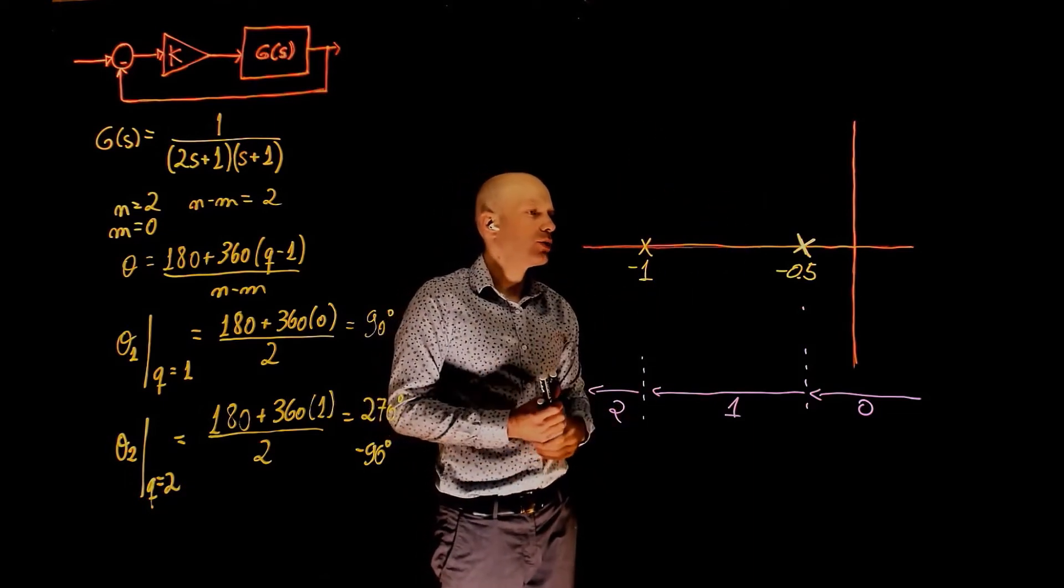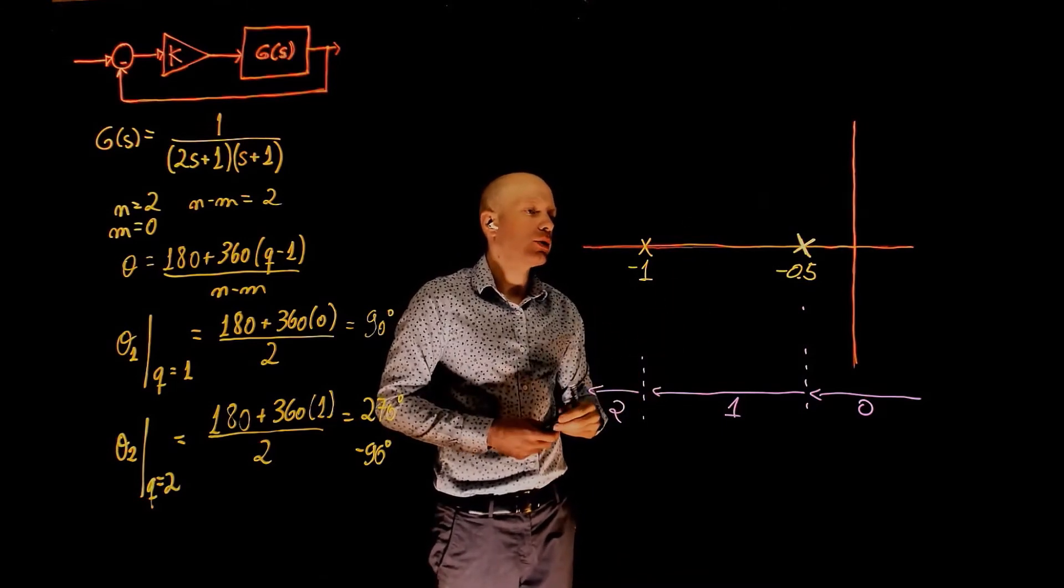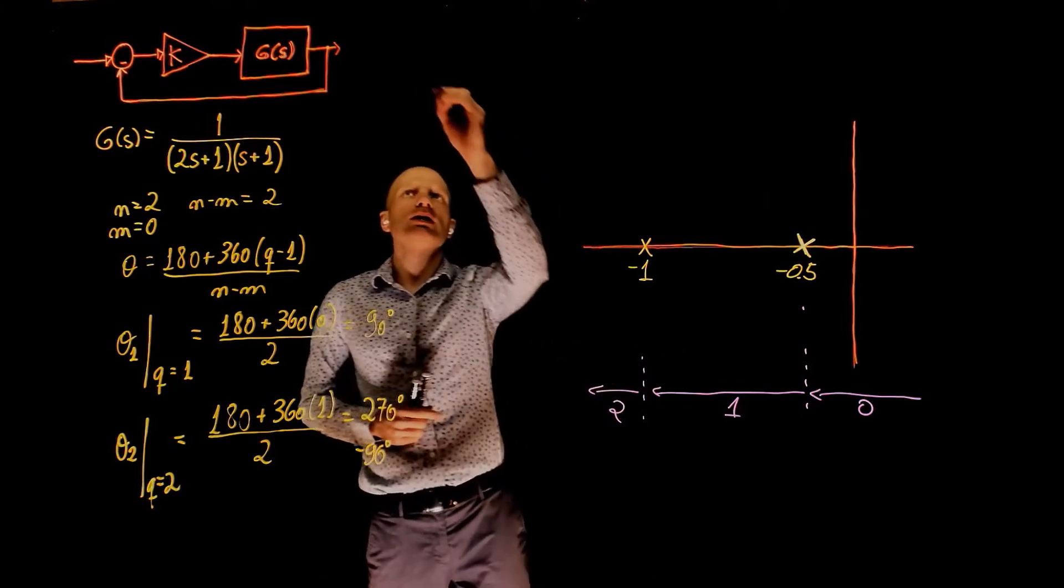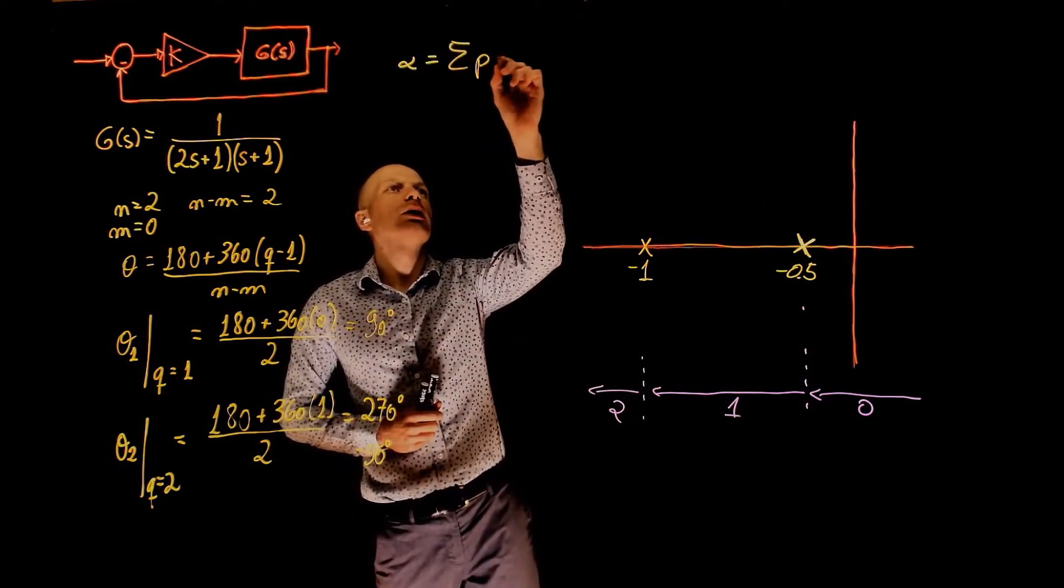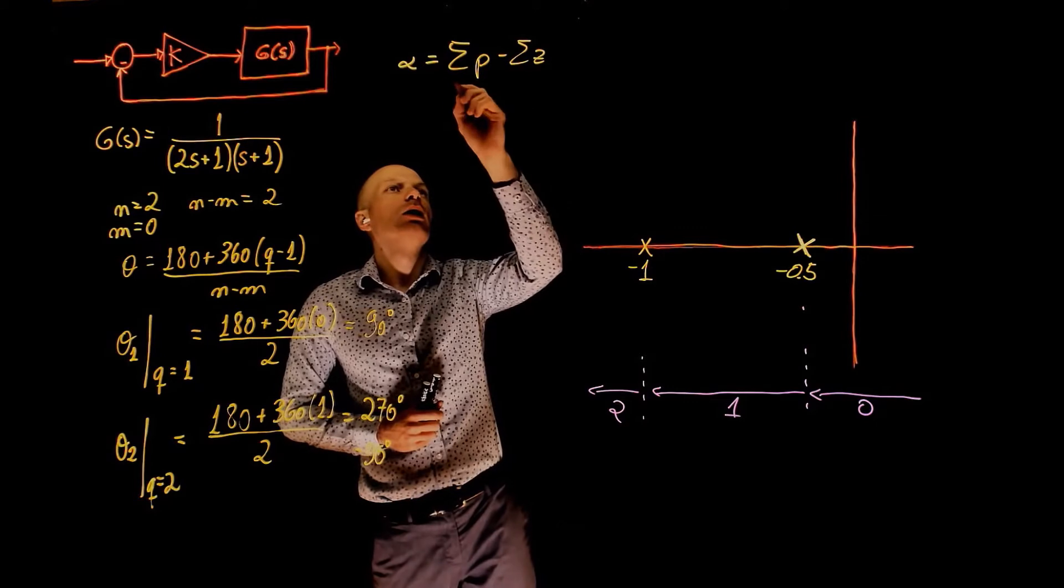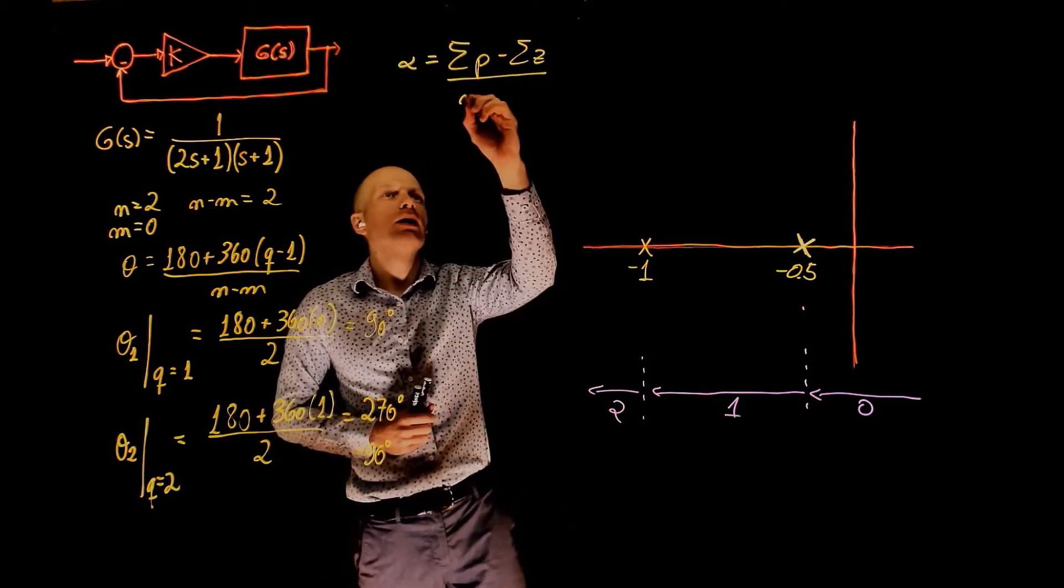We can also determine where the asymptotes will be located. Let's call the centroid of the asymptotes alpha. And you know that alpha can be determined as the sum of poles minus the sum of zeros divided by n minus m.